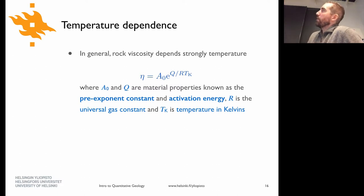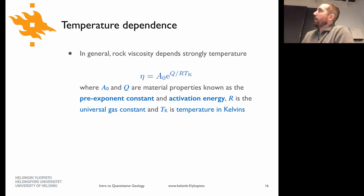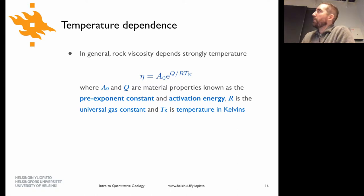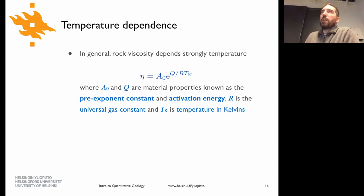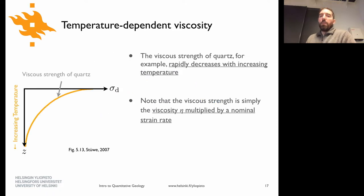Water and air are nice kinds of Newtonian fluids, but rock doesn't really deform that way. Part of the reason is that the strength of rock — its viscosity — is very strongly dependent on temperature. As you go to higher temperature, the viscosity of rock drops off. That makes sense: as you go down into the Earth, things go from being very solid at the surface to being more and more fluid-like as you go deeper.